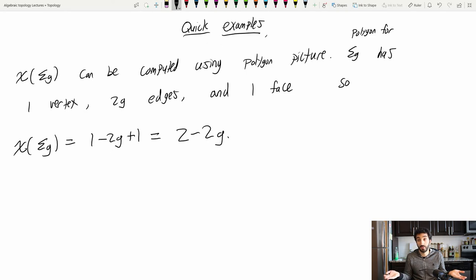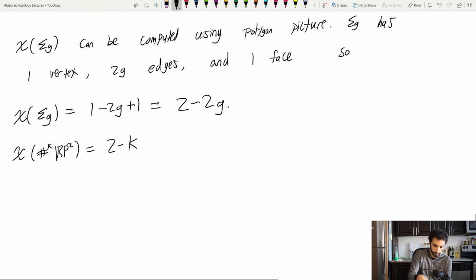And you can see how quick it was to compute. I just looked at that polygon, it was immediately able to read it off. So let's also remember that there are these non-orientable surfaces, which are the connect sum of k RP2s. And here we have that you can look at the polygon picture there and the Euler characteristic is 2 minus k.